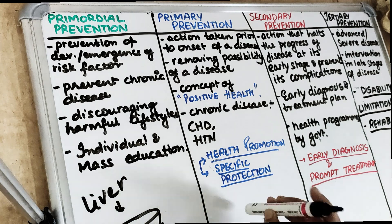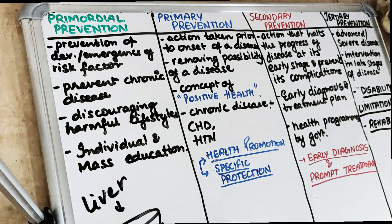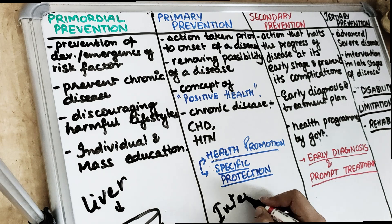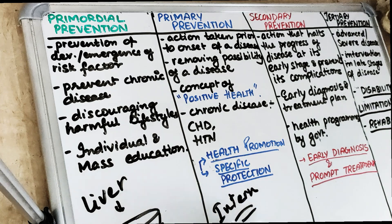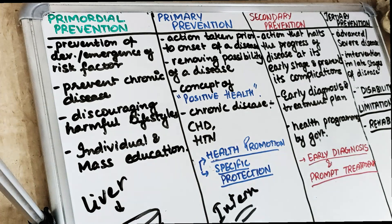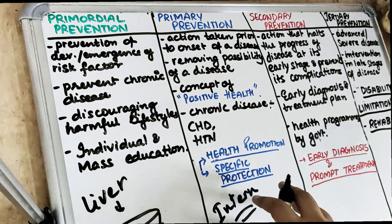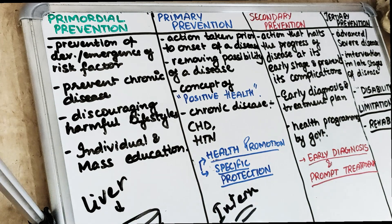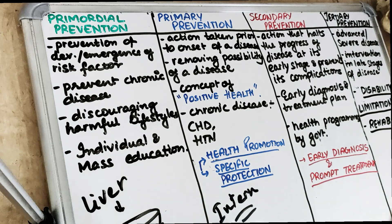Then comes the primary level of prevention. When you are in internship and you have started going to a lot of parties, I am developing a habit for you to drink a lot of juices so that you don't start drinking alcohol. I am doing health promotion, changing the habits to a more healthier way. That is the primary level of prevention.